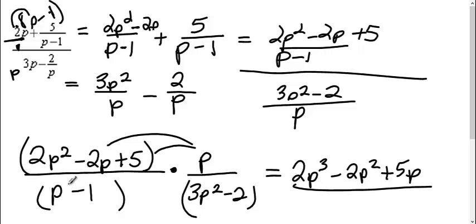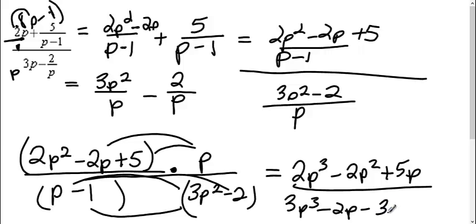On the bottom, I'm going to FOIL. p times 3p squared is 3p to the third. p times negative 2 is a negative 2p. Negative 1 times 3p squared is a negative 3p squared. And negative 1 times negative 2 is a positive 2.